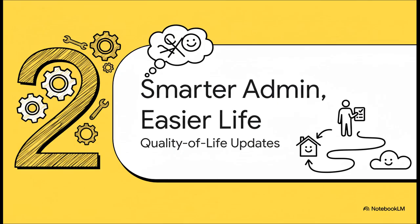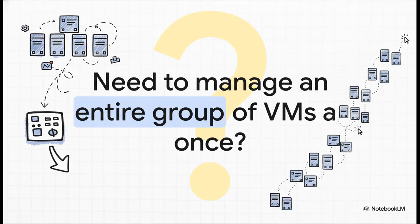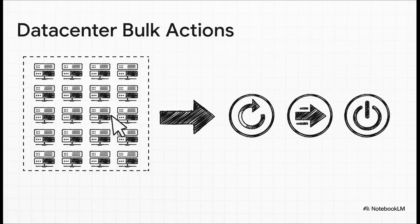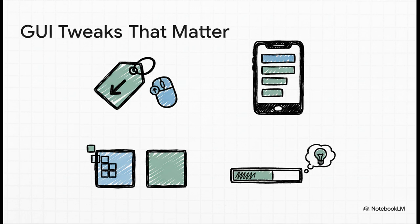Beyond those headline features, this release is stuffed with fantastic quality-of-life improvements — the practical little updates that fix everyday annoyances and just make being an admin that much easier. We've all been there: you've got a whole group of VMs for one project, all neatly tagged, and you need to reboot or move all of them. Clicking through them one by one is just tedious. Well, that chore is officially a thing of the past. Proxmox 9.1 finally gives us datacenter-level bulk actions — bulk restart, bulk migration, or bulk shutdown. You can right-click on your tags to manage whole groups. The mobile interface got a nice refresh, icons look good on high DPI screens, and memory warnings are a lot smarter. It's clear the devs are really listening to user feedback.